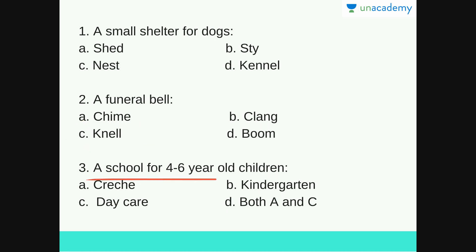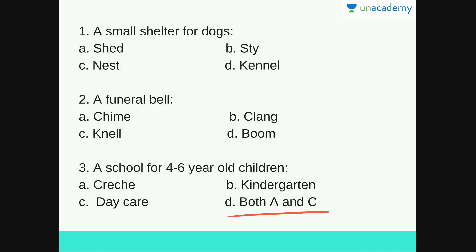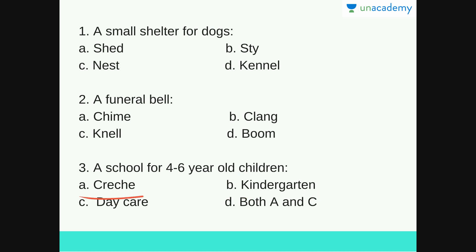Next: a school for 4 to 6 year old children. Options are creche, kindergarten, daycare or both A and C. The answer is B — Kindergarten — a school for 4 to 6 year old children to prepare them for primary school. A creche is a place where parents drop off their kids when they go off to work and kids are taken care of by employed staff. A daycare center is also the same. So the answer is B, kindergarten.